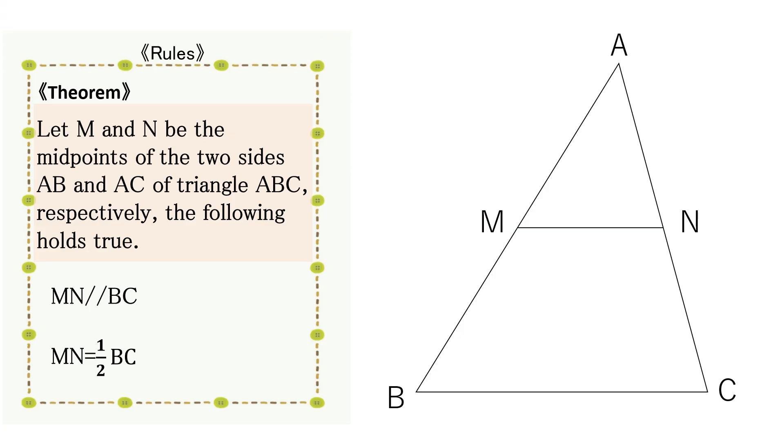Look at the figure on the right. The midpoints on sides AB and AC of triangle ABC are points M and N.